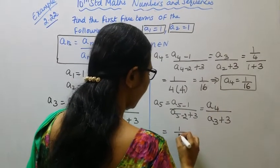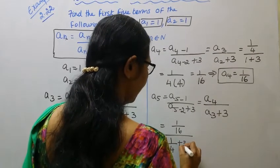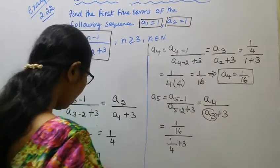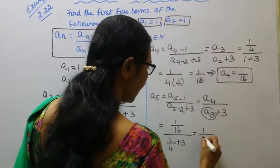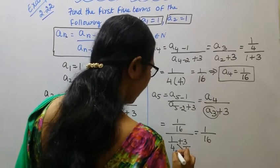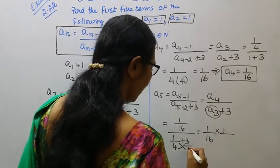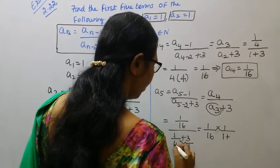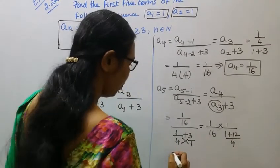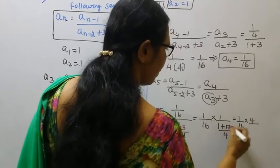a4 is 1 by 16. a3 is 1 by 4. So a5 equals a4 divided by a3 plus 3, which is 1 by 16 divided by 1 by 4, plus 3. a5 is 1 by 52.